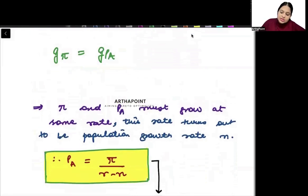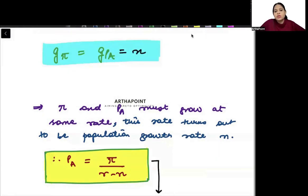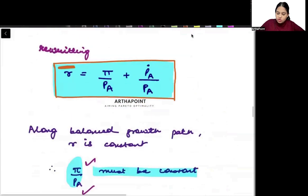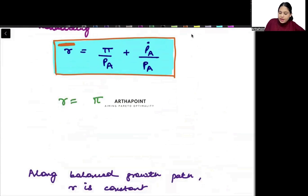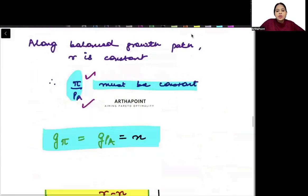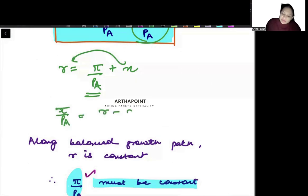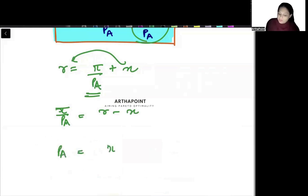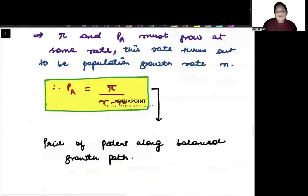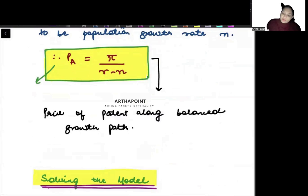It turns out that this growth rate is also equal to the growth rate of population, n. So the growth rate of Pa equals n. Therefore, r equals π upon Pa plus n. From here we find the value of Pa: taking π/Pa equal to r minus n, we get Pa equals π upon (r minus n). This is the amount you are willing to pay for the patent.